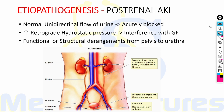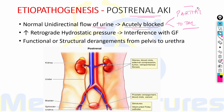In post-renal AKI, normal urinary flow is acutely blocked — either partial or total blockade — leading to increased retrograde hydrostatic pressure and interference with glomerular filtration. These can be due to any functional or structural derangement from the pelvis to the urethra.